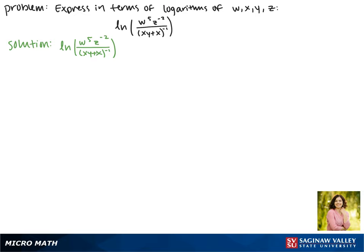We'll start by separating the numerator and denominator. Since the numerator is being divided by the denominator, we can separate this by subtraction. So this becomes the natural log of w to the fifth times z to the negative second, minus the natural log of xy plus x, all to the negative first power.